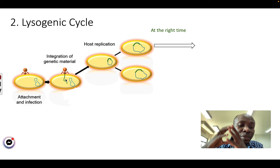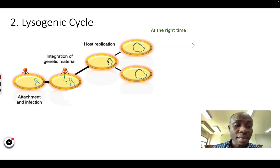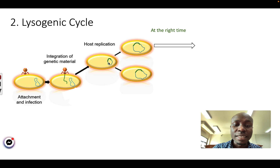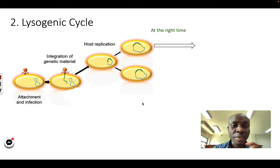Now the host cell doesn't know that there is a virus gene inside the cell. So what does it do? It will grow and divide by mitosis. But every time it divides, it also copies the DNA or RNA of the virus. And so all the new cells will have the virus genes — the virus genome.